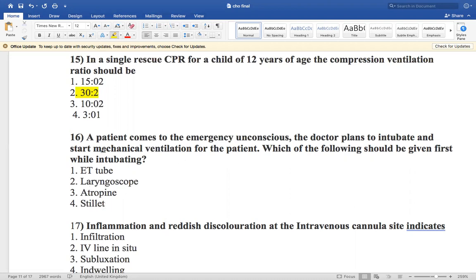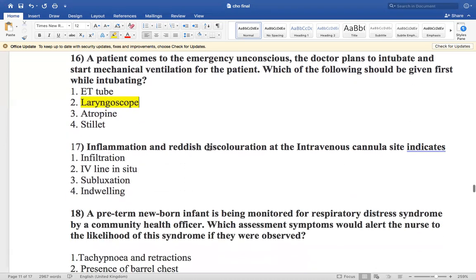Now the next is: inflammation and reddish discoloration of intravenous cannula indicates infiltration, IV line in situ, subluxation, and indwelling. So redness and inflammation suggests infiltration.